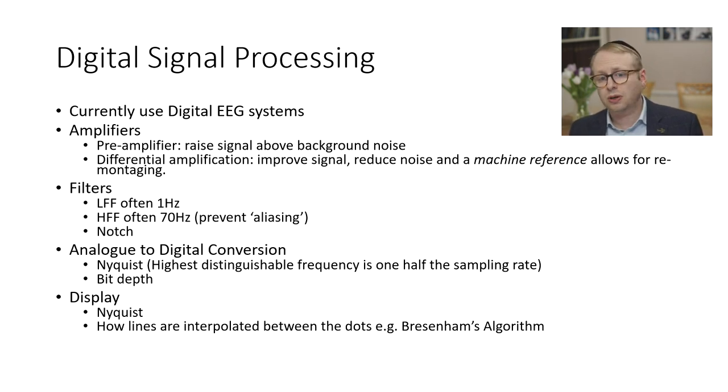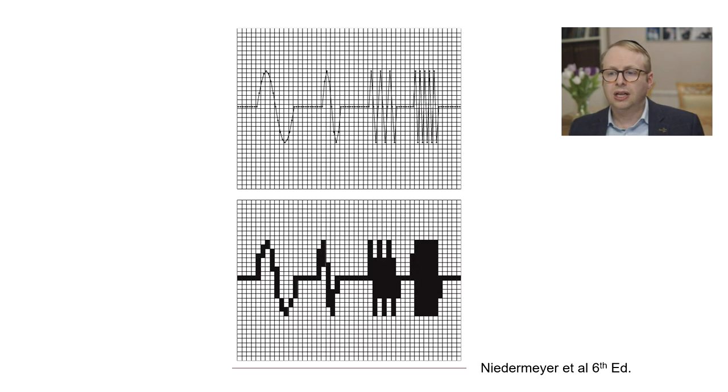Even after you've done your analog to digital conversion, how it's displayed on your screen is also important where we still have issues with Nyquist occurring, and even things such as how the lines are interpolated between the dots. There are various ways in which those will happen. This is just a lovely little example from Niedermeyer and colleagues.